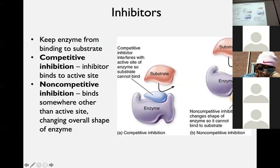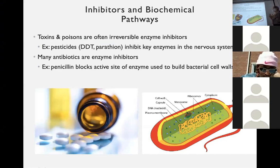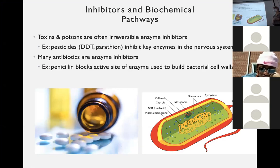Those are our inhibitors. Why do they matter? From a biological perspective, we actually use inhibitors a lot in everyday life. Enzyme inhibitors — a lot of toxins and poisons, when we're trying to kill things we don't want in our house — insects, rodents, that kind of stuff, or eating our crops — we use these enzyme inhibitors.